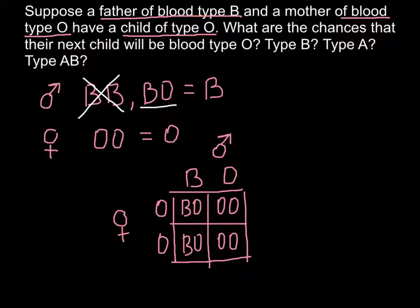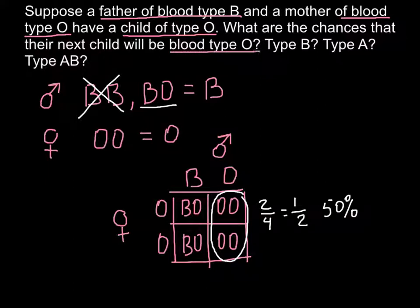The first question is: what are the chances that the next child will be blood type O? As you see, 50% of the progeny would belong to this blood group. So 2 out of 4, that is 1 half, or 50%. So the answer is that blood type O would make 50% of their progeny.